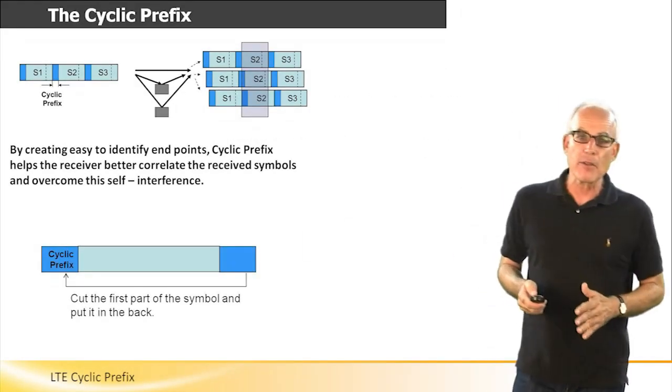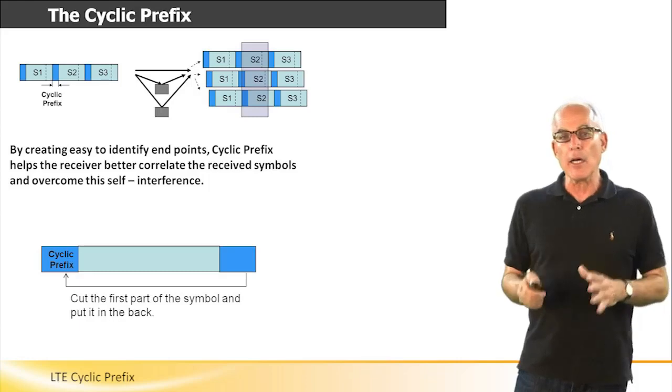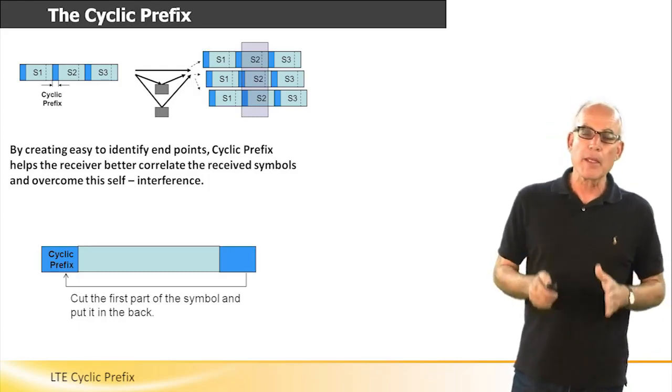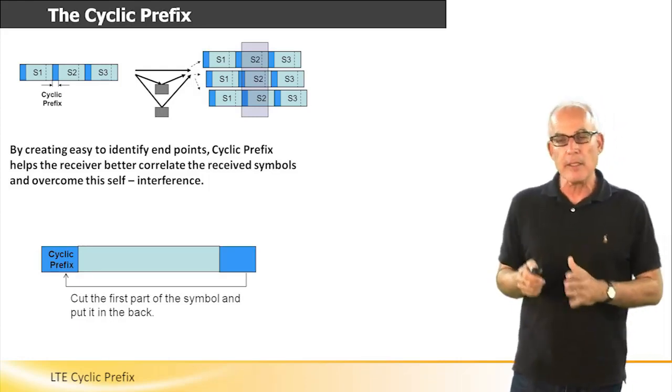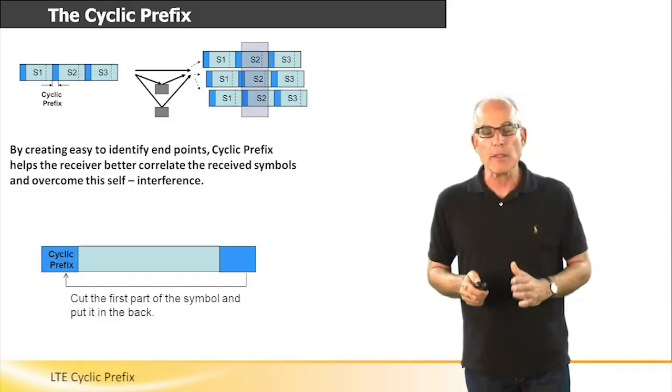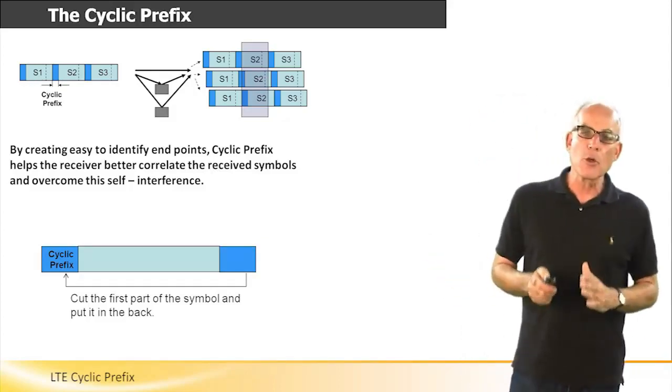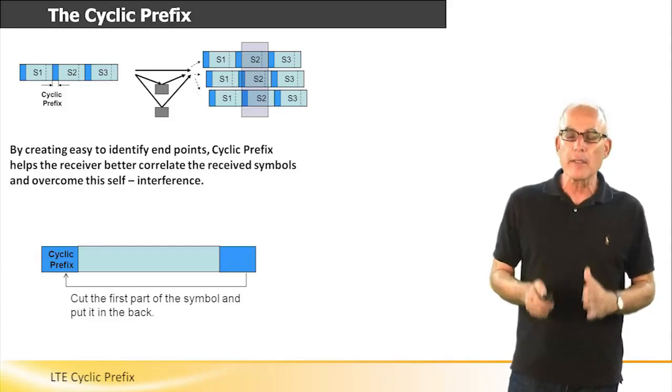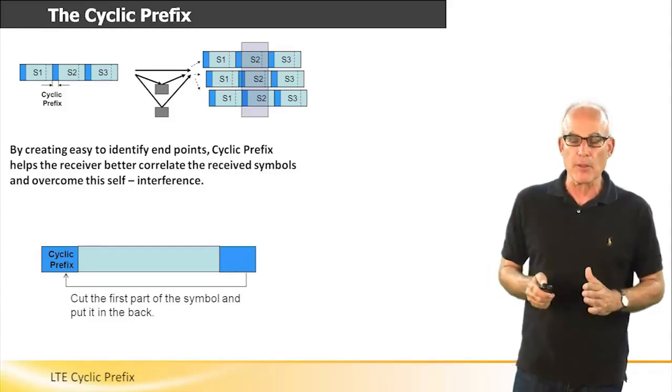The cyclic prefix is a guard band made between LTE symbols. This guard band is required to cope with inter-symbol interference.